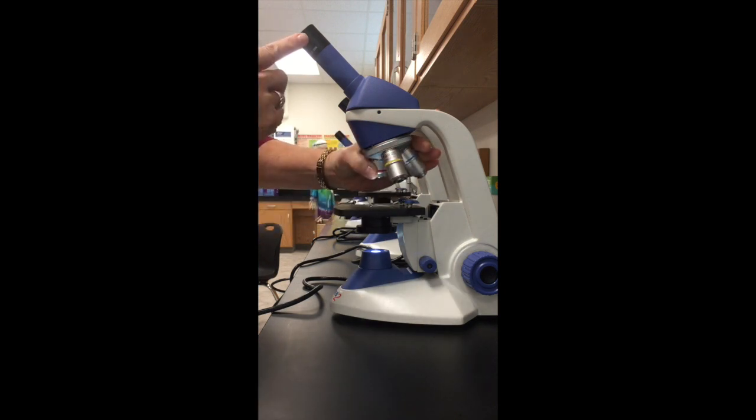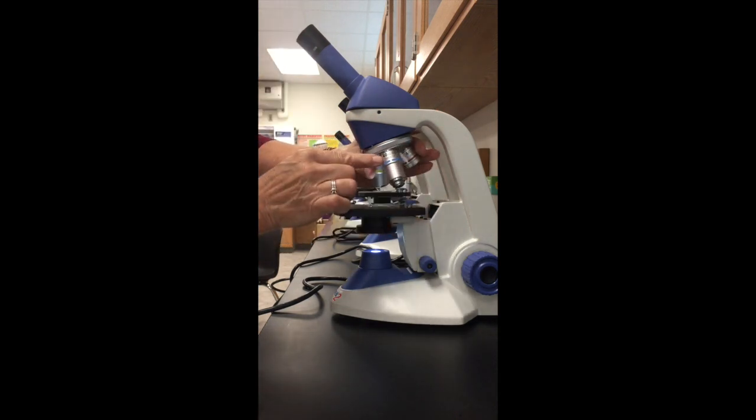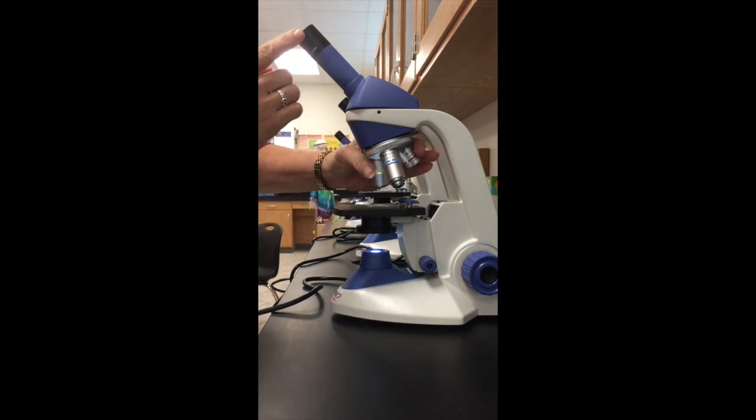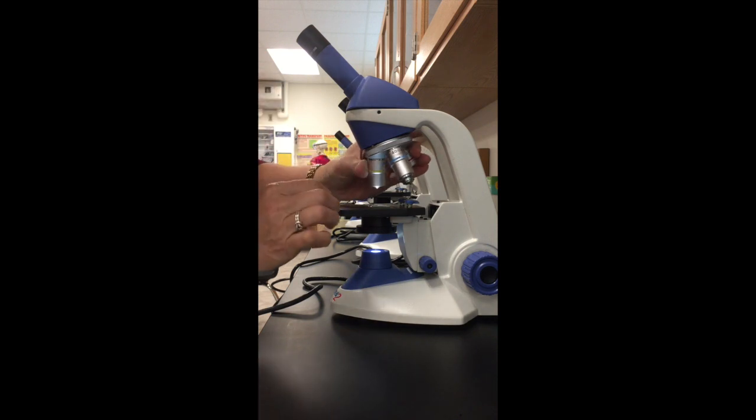Then we have three different objectives. One that magnifies by four times, so four times 10 is 40. Ten times 10 is 100. And the largest one, the largest objective, is 40 times, but we multiply it times 10, which gives us a 400 magnification.